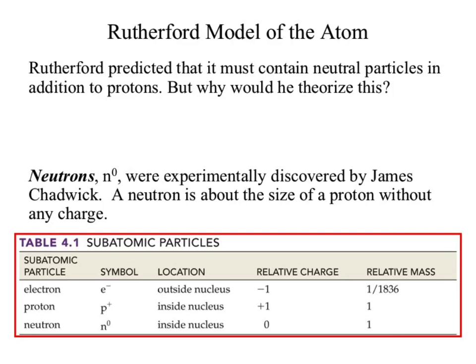The neutron was discovered by James Chadwick. A neutron is equivalent to a proton in all things except charge — it has the exact same mass as a proton but no charge. Chadwick was actually Rutherford's student, just as Rutherford was Thompson's student. They all kind of fed each other information down the line.